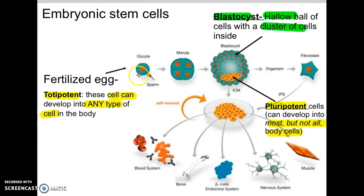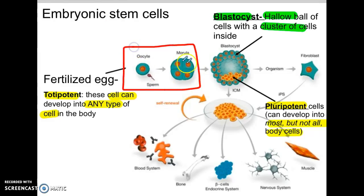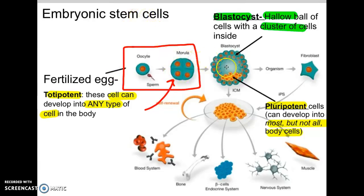When the sperm and egg have fertilized and come to about four cells after that, we call this stage totipotent. Totipotent refers to how these cells are stem cells that can become any type of cell in the body — any cell at all. After a couple more divisions, the fertilized cell continues developing.